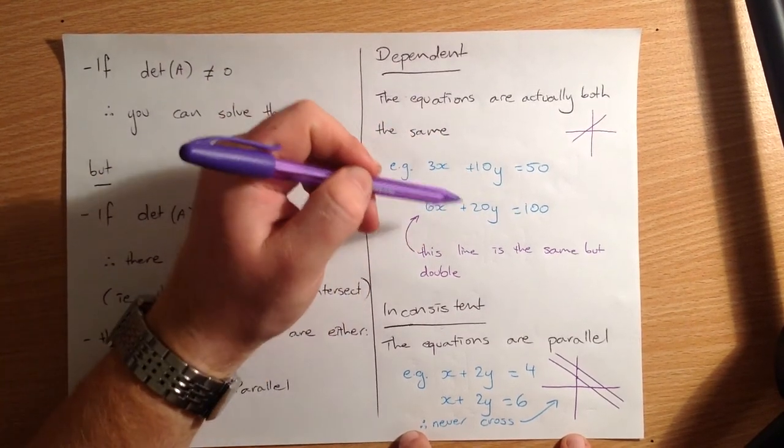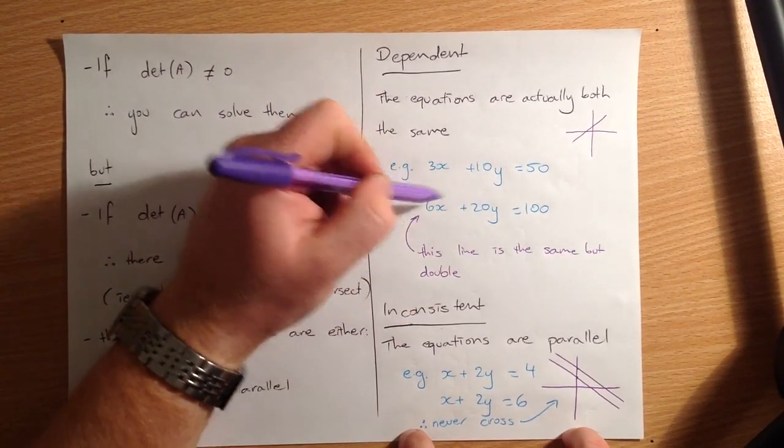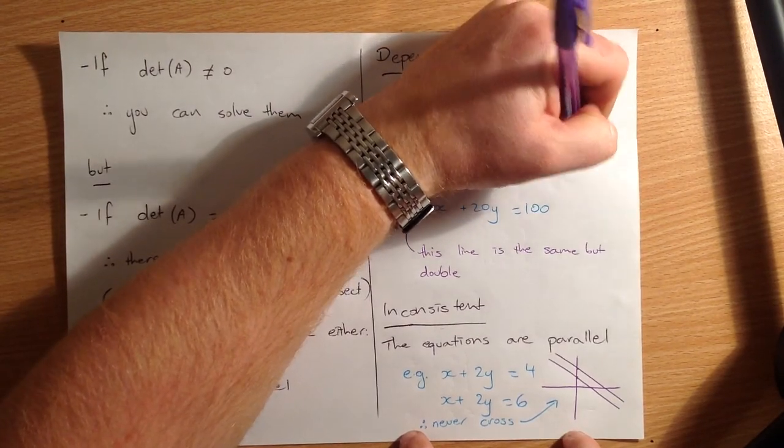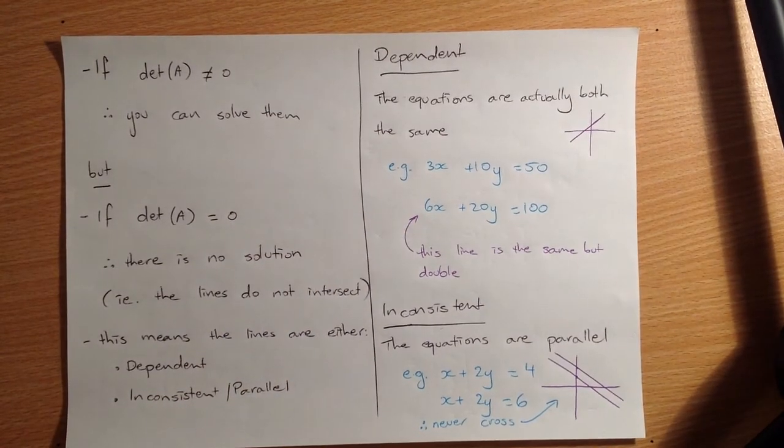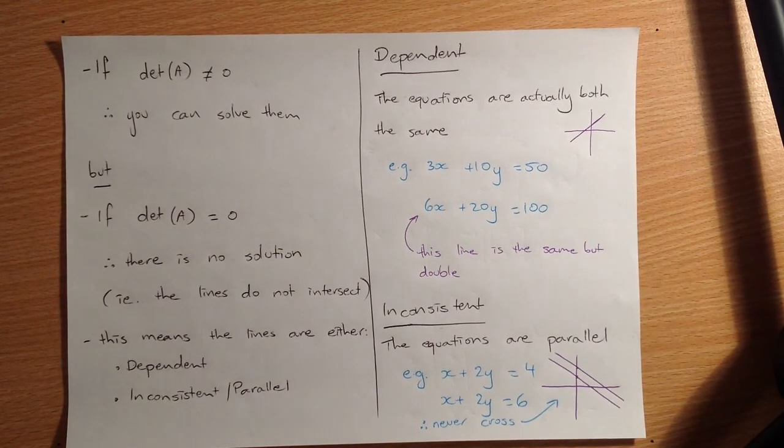10y times 2 is 20y. 50 times 2 is 100. We just times everything by 2. They're actually the same line. Like we could simplify this and it would equal exactly the same thing. So it's kind of like you've got two lines right on top of each other like that. It's tricky obviously for me to draw for you, but there's two lines right on top of each other.